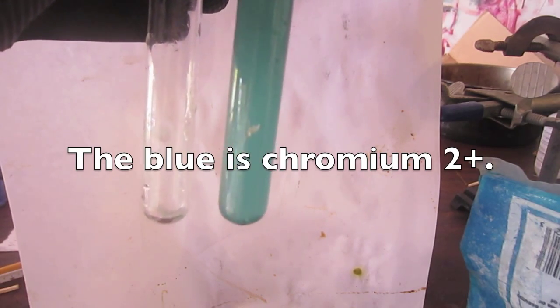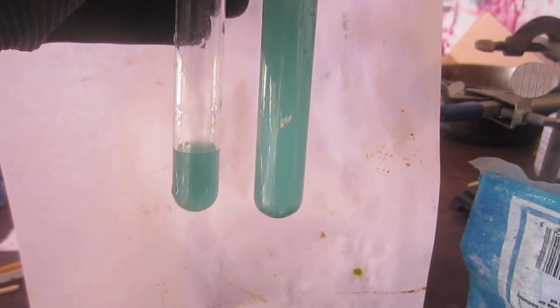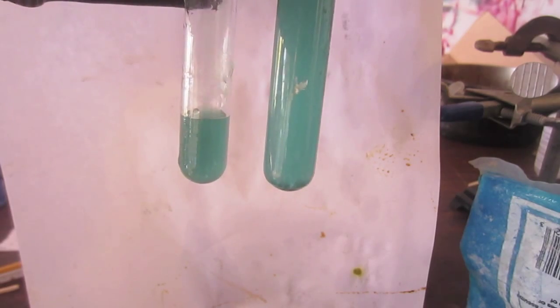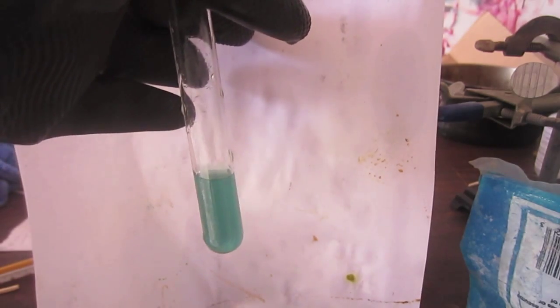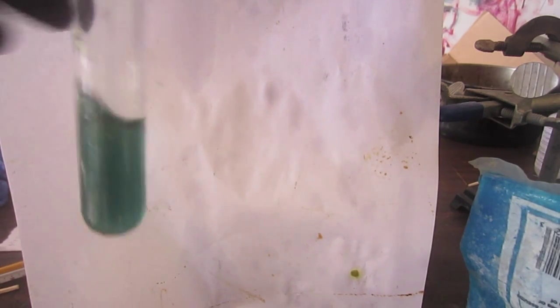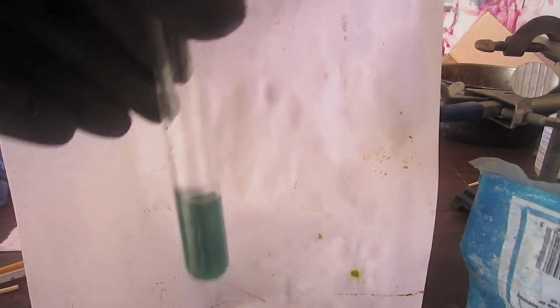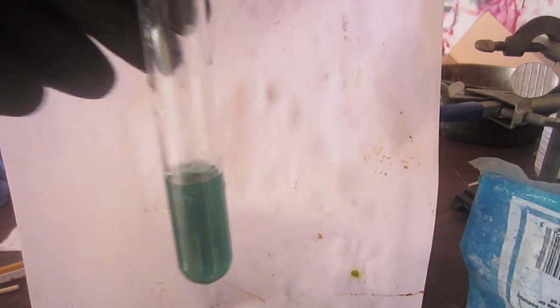And what's cool is that chromium two plus is actually quite sensitive to oxidation, very sensitive to oxidation, even by air. So here I am pipetting the chromium two plus solution into a separate test tube where it doesn't have the zinc to reduce any three plus created. When I shake it around in the air, you'll see that the blue turns quite a bit darker green. There is the original chromium three plus green solution. So there you go. You've seen two different oxidation states of chromium. Now I'll show you a couple more.